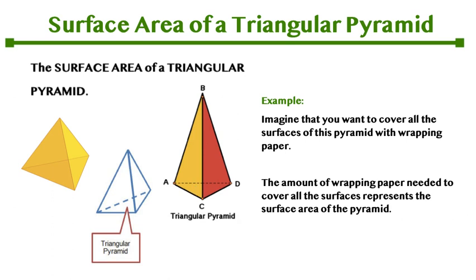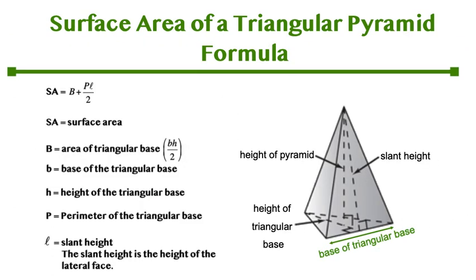So let's take a look at your formula. Capital SA stands for surface area and that is equal to capital B plus P times L divided by 2. Capital B represents the area of the triangular base. So remember your base is a triangle, so the area formula of a triangle is base times height divided by 2.